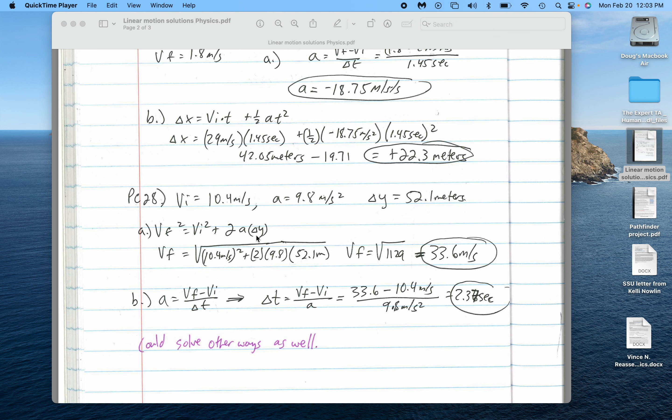I'm using delta Y instead of delta X because we're thinking vertically. It doesn't really matter to me. So I end up doing this, getting 33.6 meters per second.